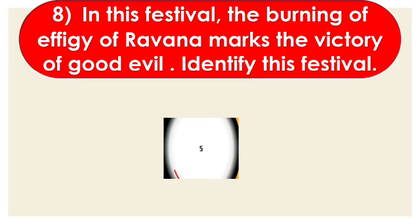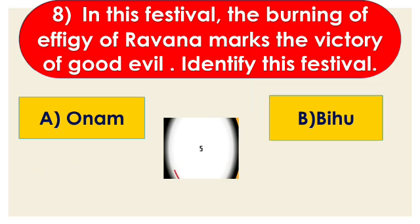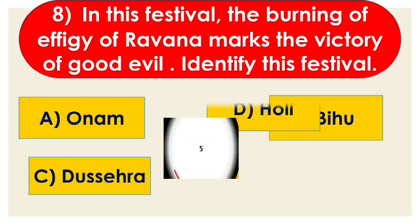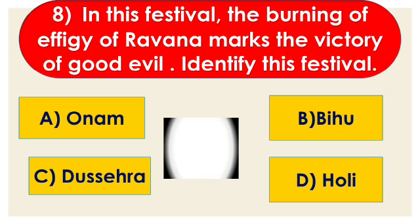Question number 8: in this festival the burning of the effigy of Ravan marks the victory of good over evil. Identify this festival. Options are A. Onam, B. Bihu, C. Dussehra, and D. Holi. The right answer is option C, Dussehra.